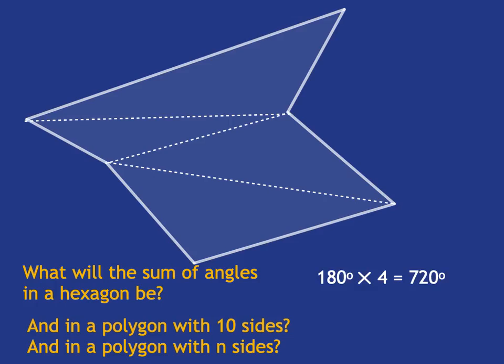And so the sum of its interior angles will be 180 times four, which is 720.